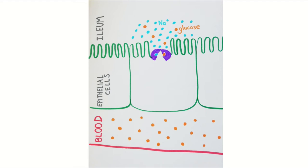So the glucose has to travel from the ileum, where it is at quite a low concentration, through the epithelial cell, and into the blood, where it is at a higher concentration. First of all, glucose moves into the epithelial cell from the ileum by co-transport, along with sodium ions. Sodium moves down its concentration gradient and carries the glucose along with it.